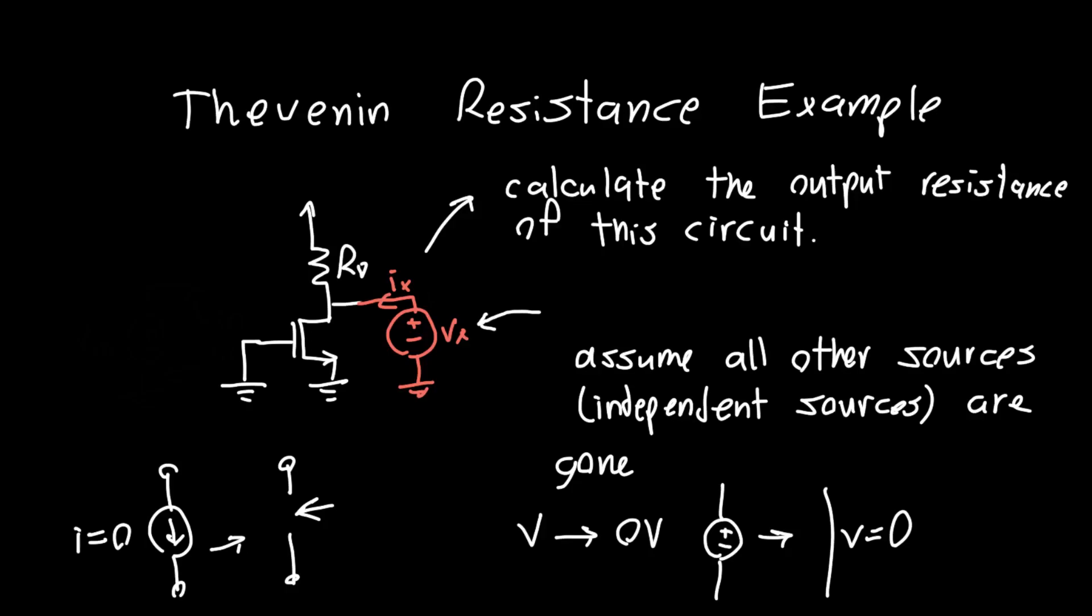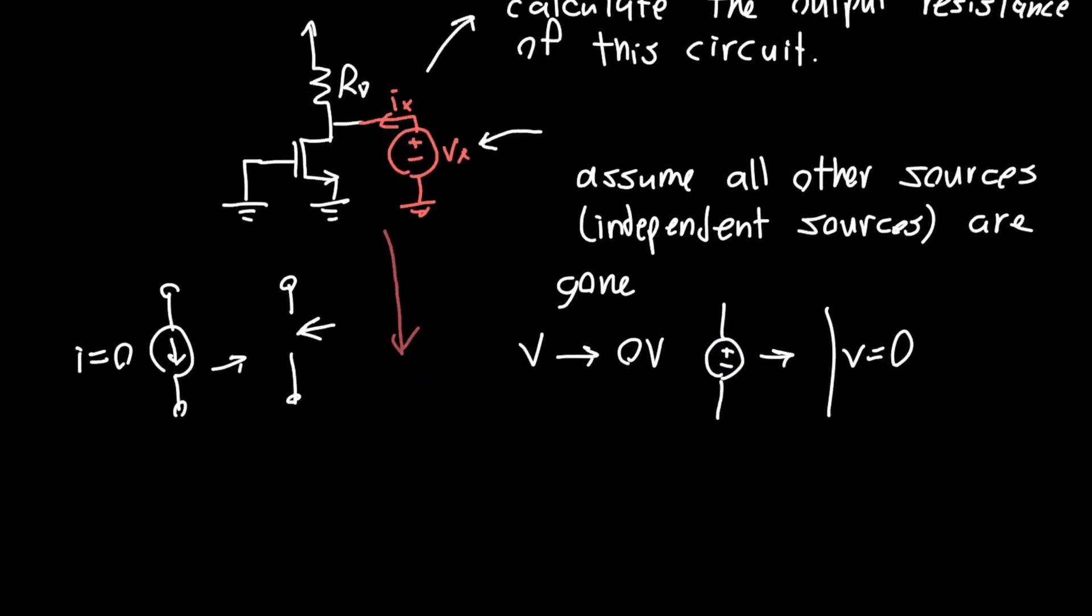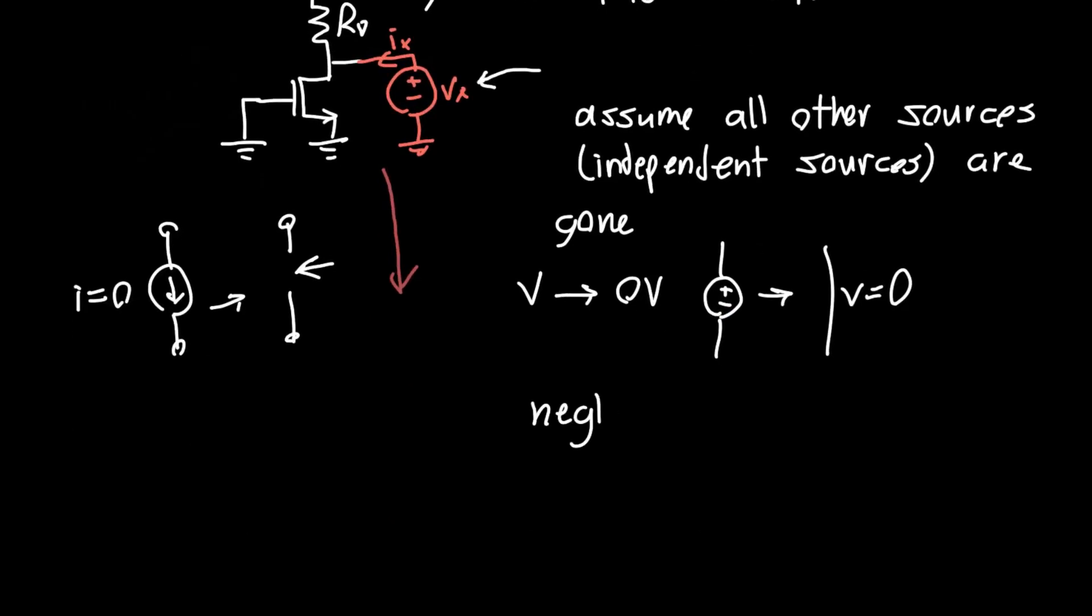Now how do we calculate the Thevenin resistance? Let's draw out the full model for the circuit. Let's say we're going to neglect R_o - the lambda term or channel length modulation of this device. If we draw out the small signal model, we've got a drain resistance here RD.